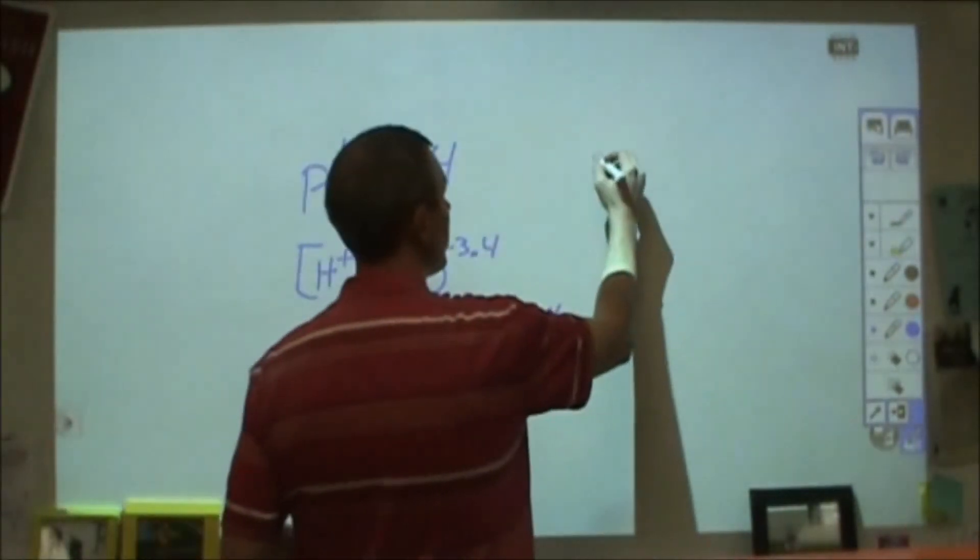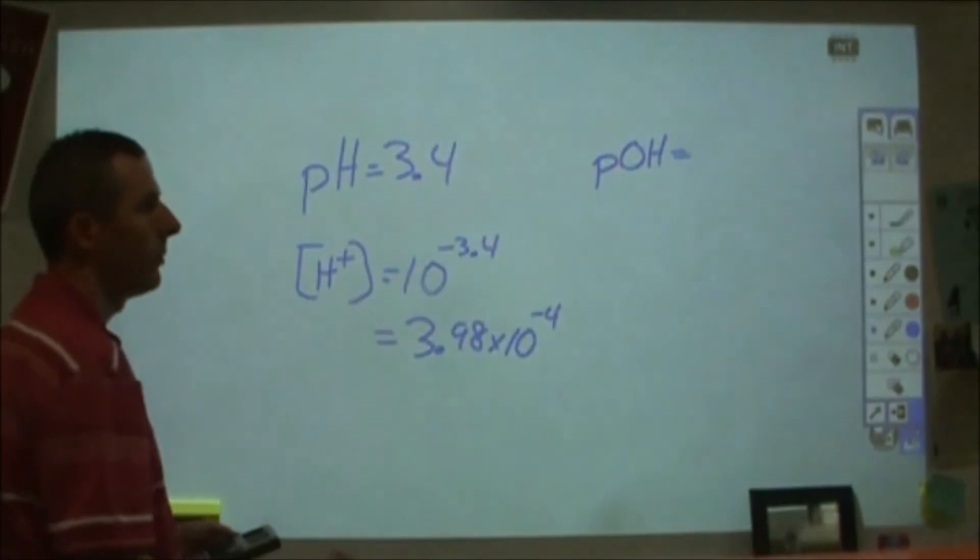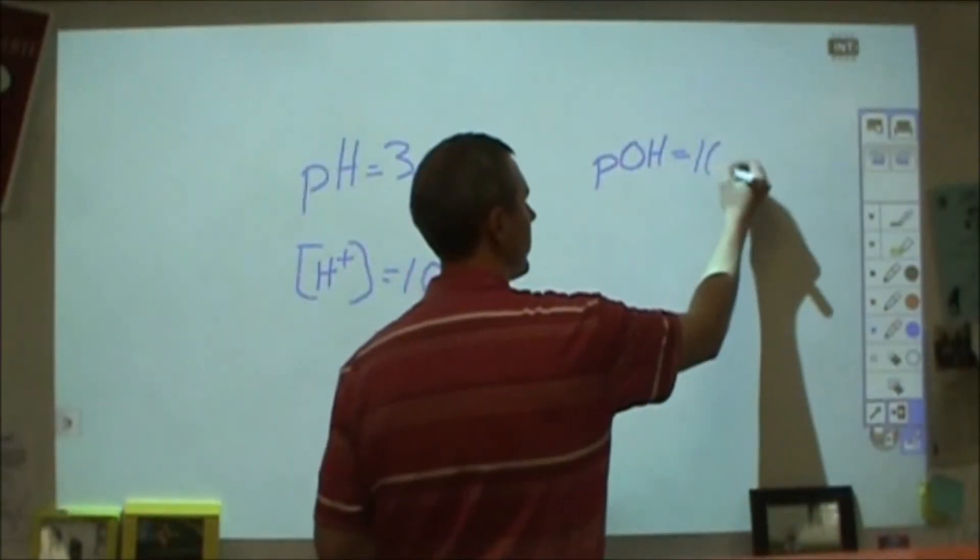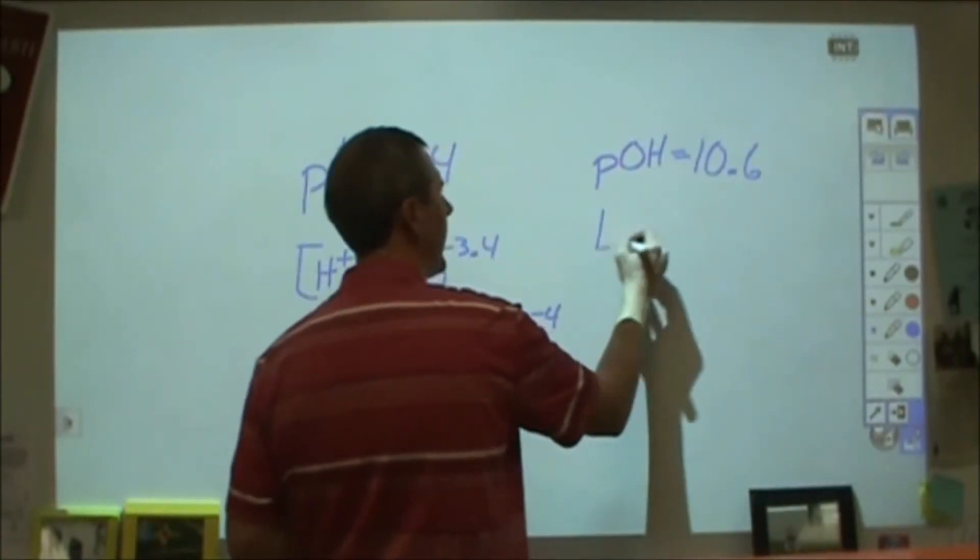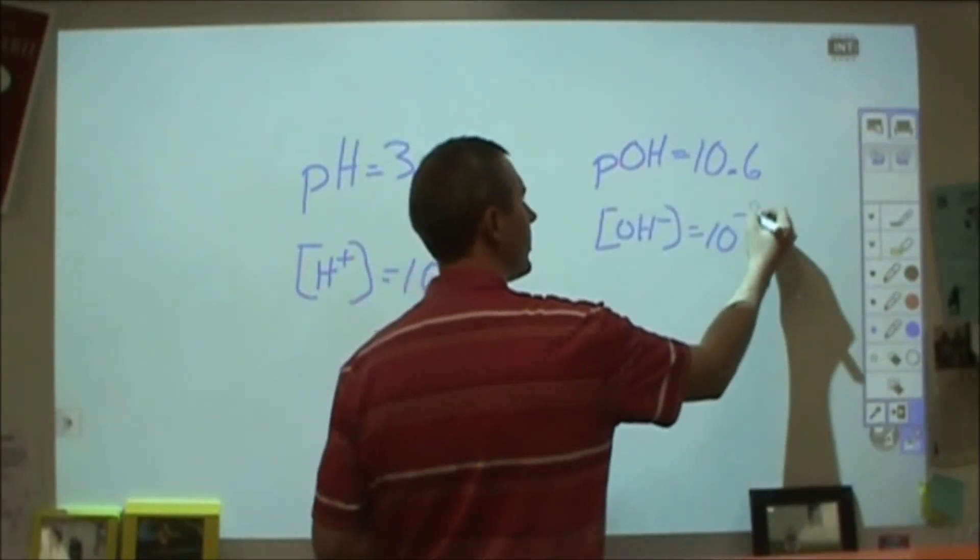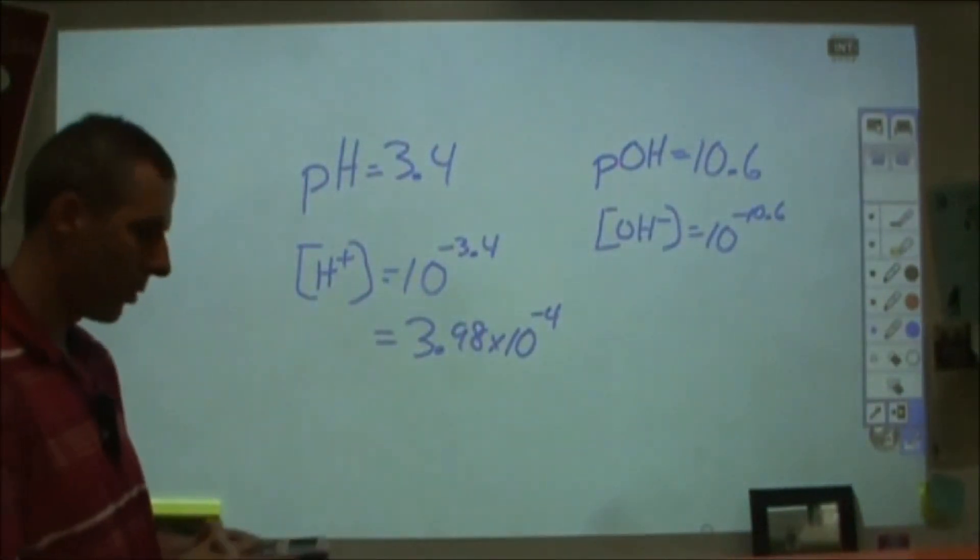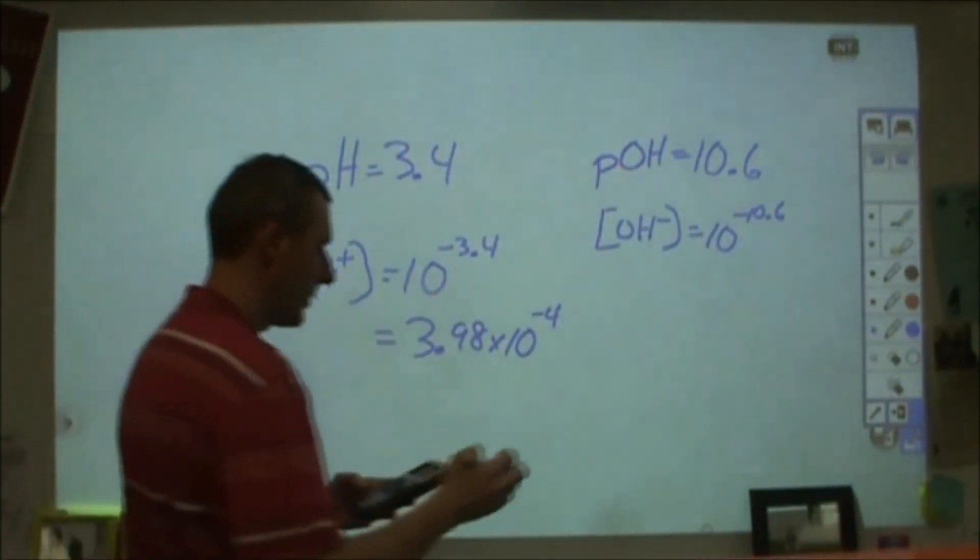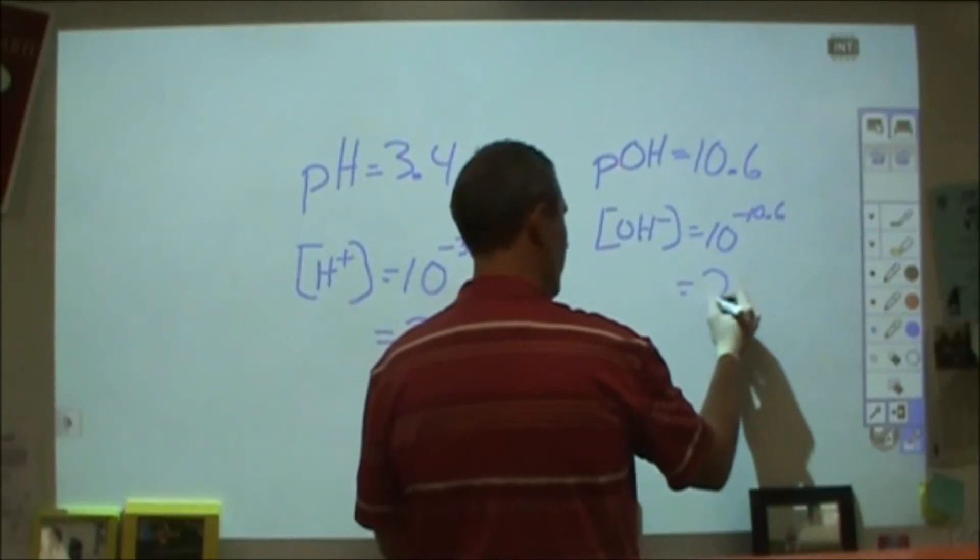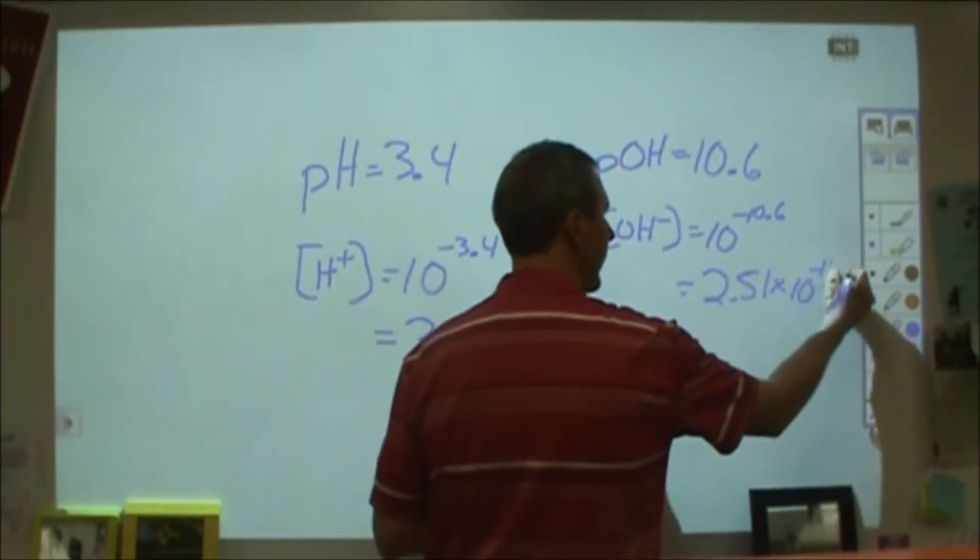If I want to find the pOH, of course these are going to add to 14. So 3.4, pOH is going to be 10.6. And the hydroxide concentration is going to be 10 to the negative 10.6. Again, please don't have a decimal and an exponent, that's annoying. So that comes out to be 2.51 times 10 to the negative 11th power.